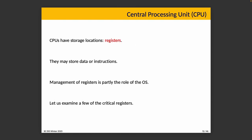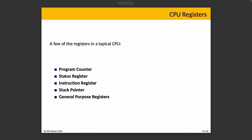CPUs also have storage locations built into them called registers. Registers store data or instructions — they are, after all, just a bunch of bits. Management of registers is partly the role of the operating system. The program counter is a key register: it keeps track of what instruction is next. After the instruction at an address has been fetched, the program counter is incremented and points to the next instruction — or at least our best guess at what it will be.